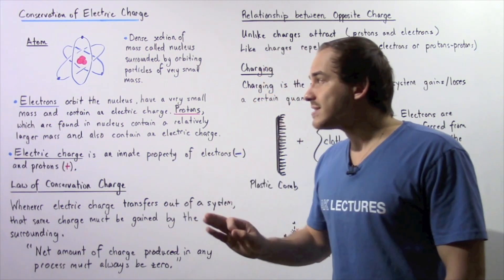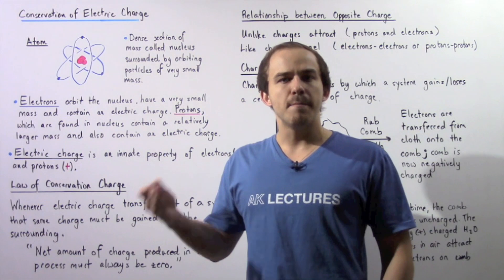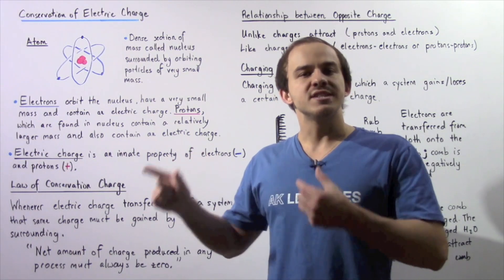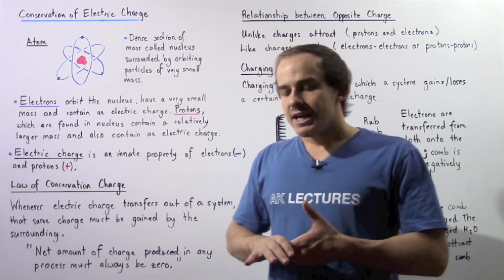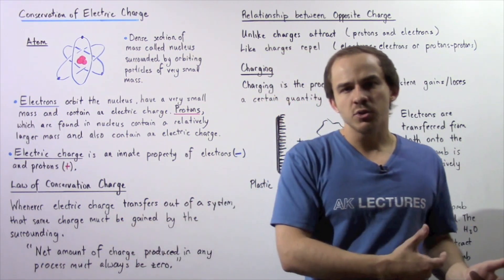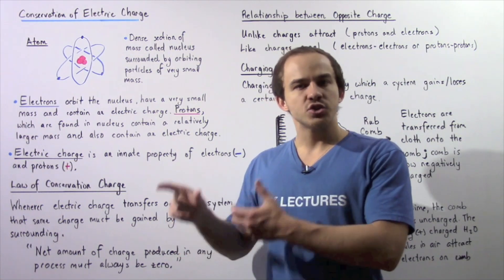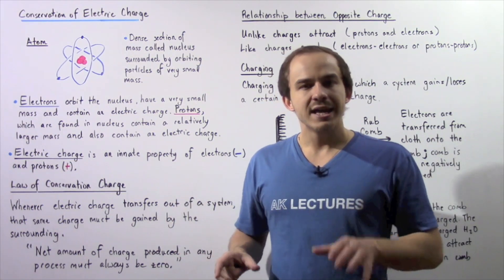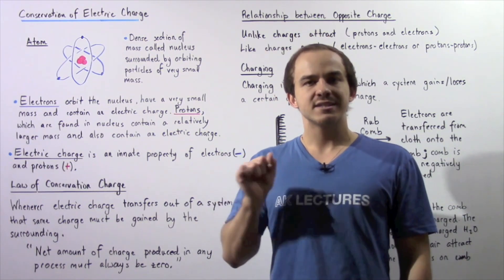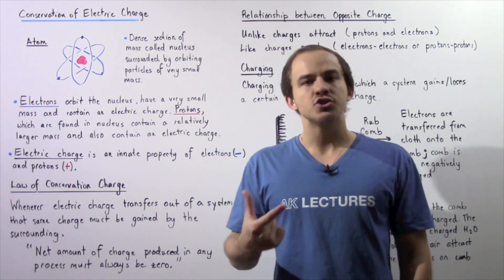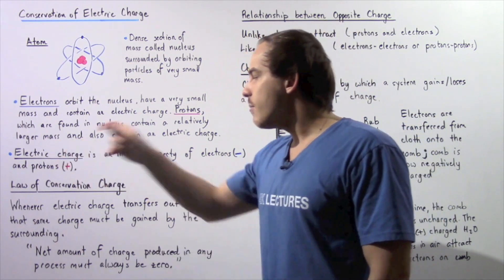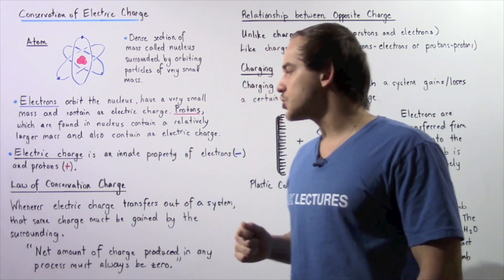Even though the mass of an electron is much smaller than the mass of a proton, they have the same exact quantity of electric charge, but the signs are opposite. In the same exact way that energy can transfer from one location to another, electric charge can also transfer. And in the same exact way that the quantity of energy in the universe remains constant, the quantity of electric charge in the universe also remains constant. That's exactly what we mean by the law of conservation of electric charge.